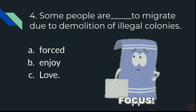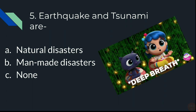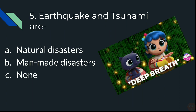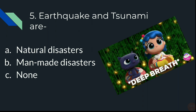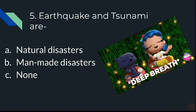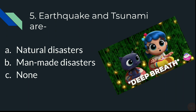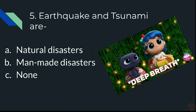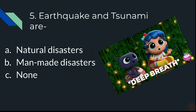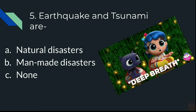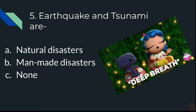Question 5: Earthquake and tsunami are — A) Natural disaster, B) Manmade disaster, or C) None.